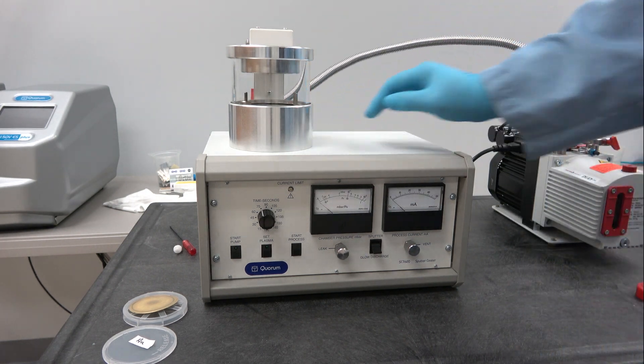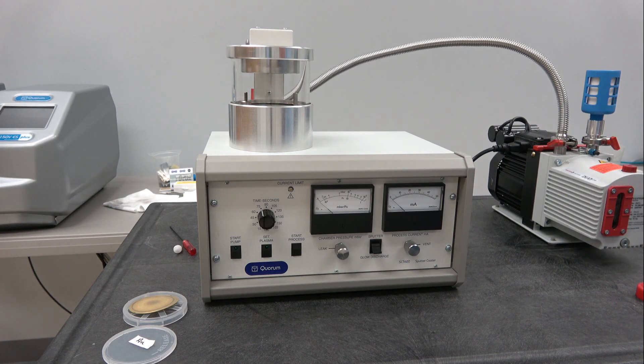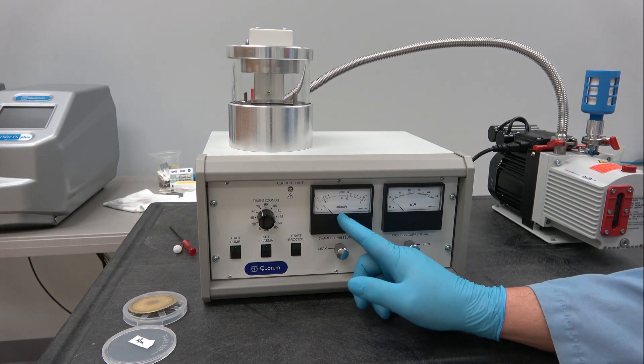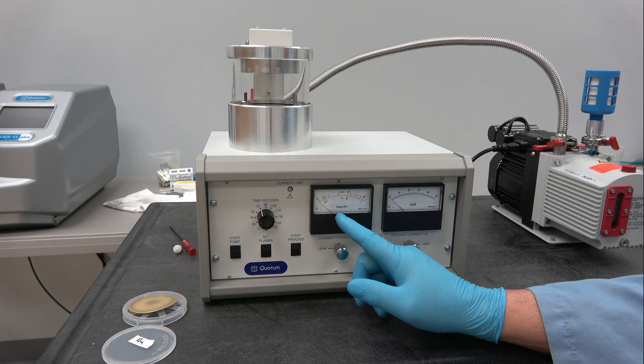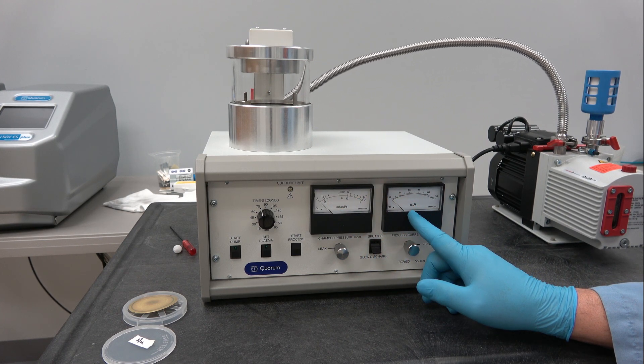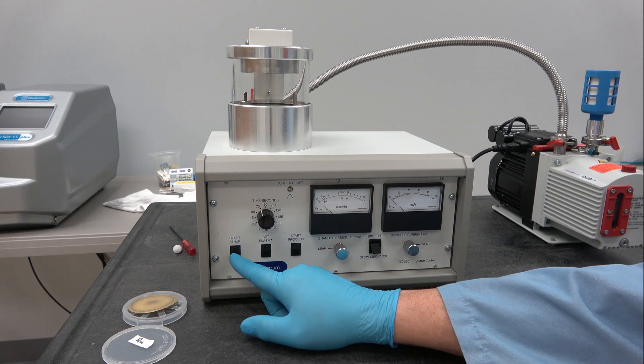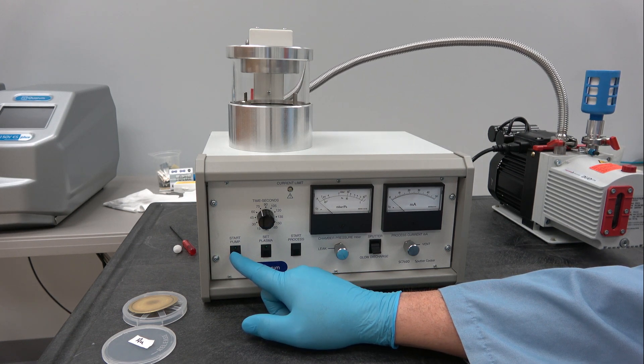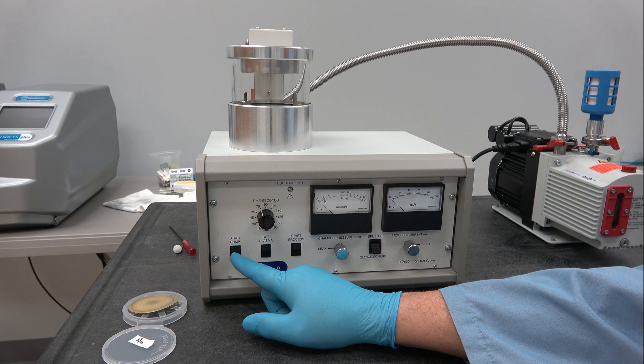We have the vacuum meter here. We have the sputter current analog gauge here. Start pump will start the whole operation, which I'll demonstrate in a moment.